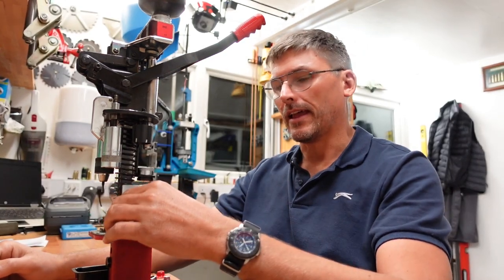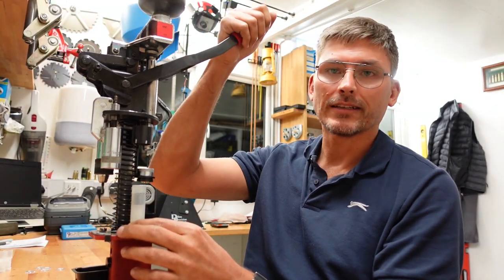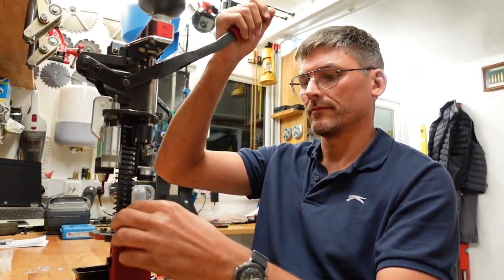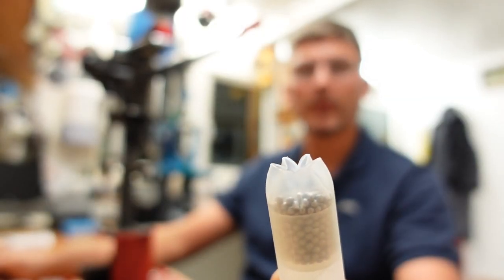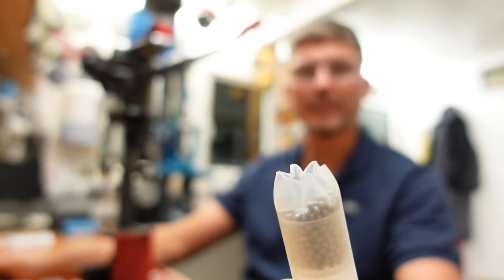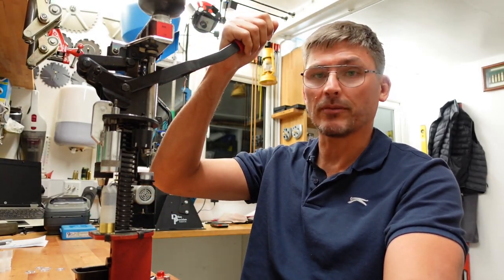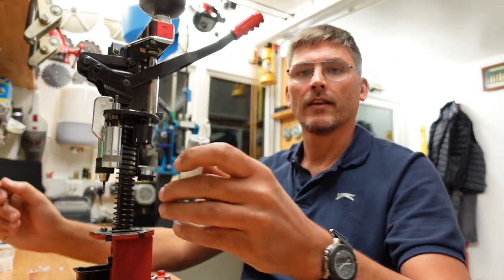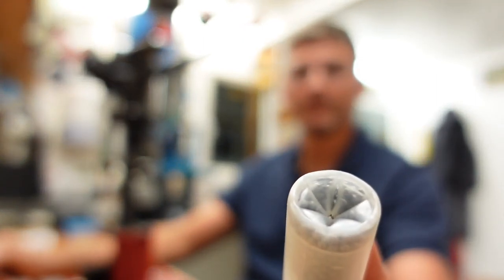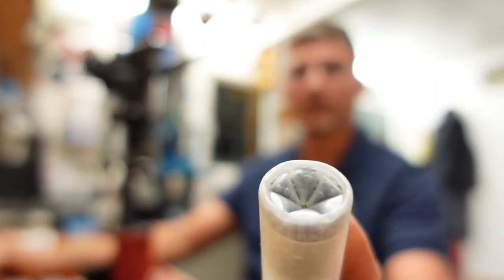I'm going to demonstrate a star crimp on this Mec 600 Jr. And the first station does the pre-crimp. We can see that the pre-crimp has formed petals. Okay, now comes the final crimp where we're going to push the petals down. And this then is the final crimp.